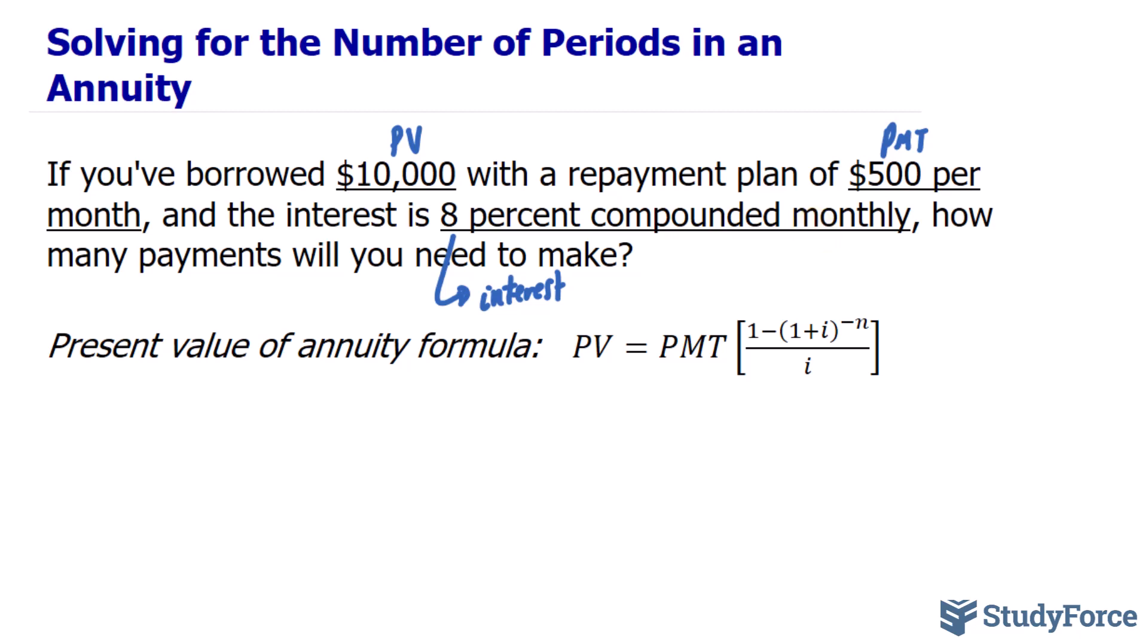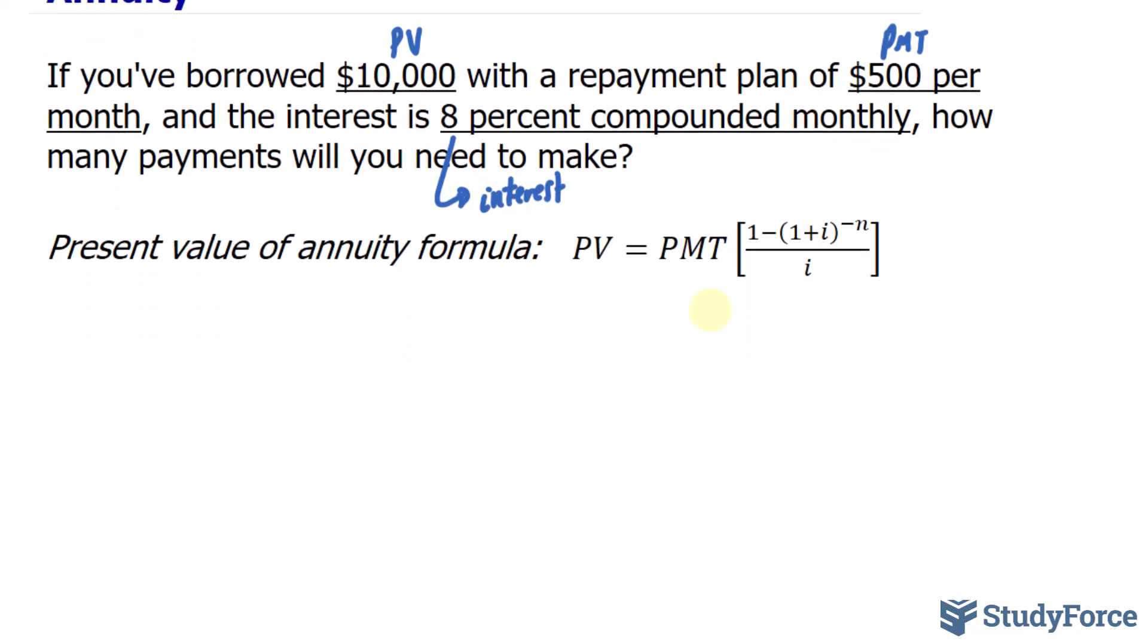So you have one of two options at this point to solve for n. One of which is to substitute those values in where they belong into the formula, then solve for n. And the other option is to solve for n, then substitute those values afterwards. Let's perform the latter.